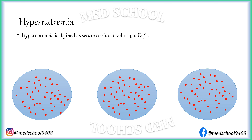Hypernatremia is defined as serum sodium level more than 145 mEq per litre. But some labs take 150 or even 155 mEq per litre as the upper normal limit of serum sodium.